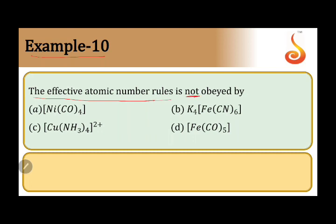The effective atomic number rule states that the d-block elements, transition metals, they try to achieve the atomic number of the nearest noble gas by accepting electron pairs from ligands.